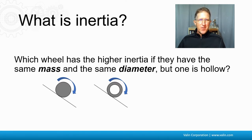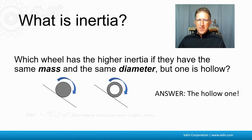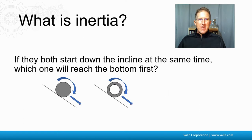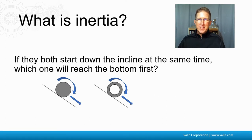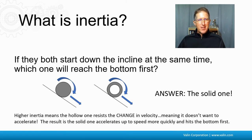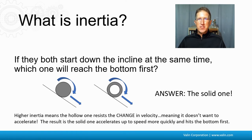Here's a favorite interview question: which wheel has the higher inertia if they have the same mass and the same diameter, but one is hollow? The answer is the hollow one. If you let both wheels start down an incline at the same time, the solid one reaches the bottom first — because the solid one has lower inertia. The hollow one has higher inertia, which means it resists the change in motion, so it accelerates more slowly.